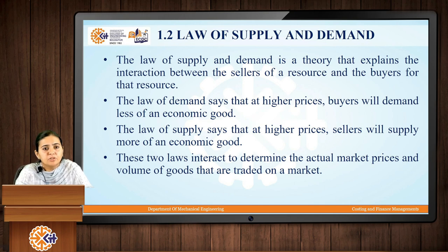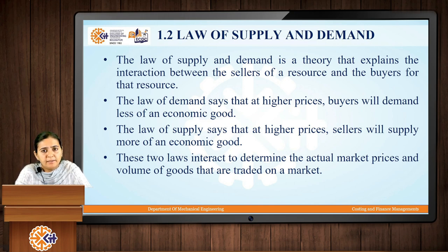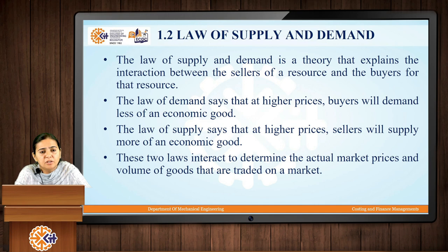Based on the circular flow economy model, let us now study the law of supply and demand. The law of supply and demand is a theory which explains the interaction between the sellers of a resource and the buyers for that particular resource. Whenever the prices of a particular product are higher, the buyers will try to restrict themselves from buying that product. But the manufacturer on the other end will be very keen to manufacture a large amount of that product. This is nothing but the law of supply and demand.